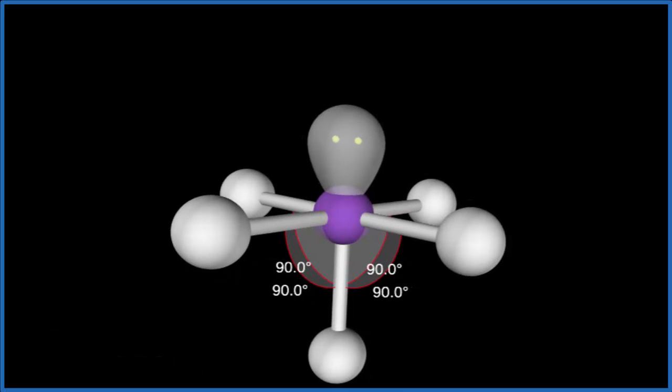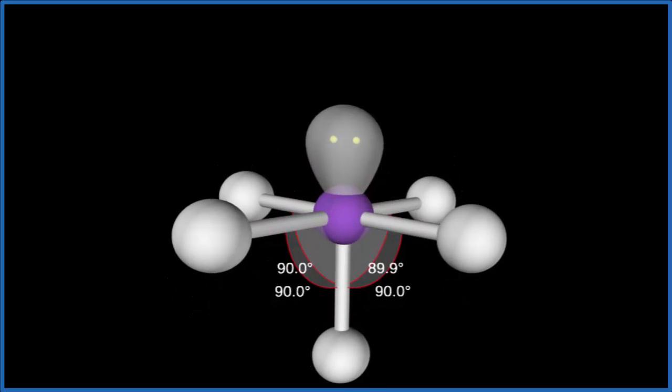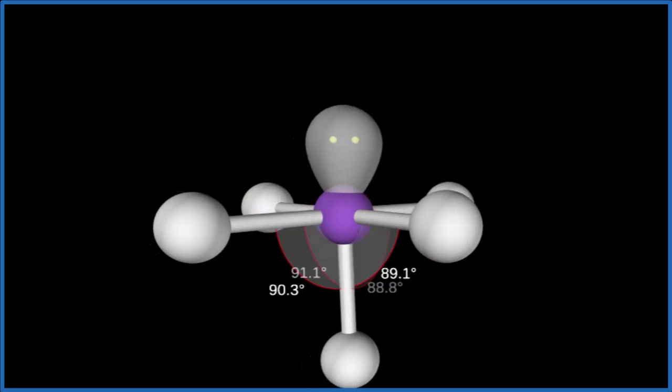If you wanted to look at the electron geometry, we would count the lone pair and then these 5 atoms. We'd have an octahedral electron geometry.